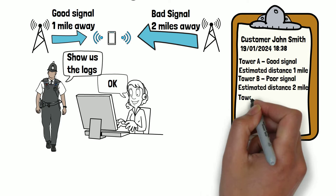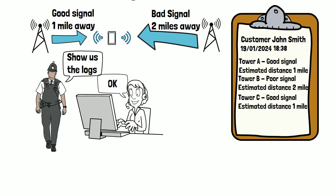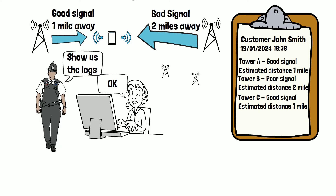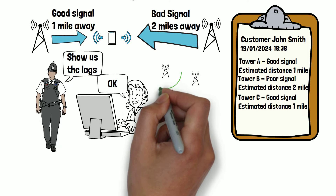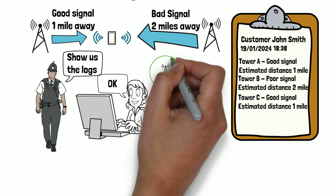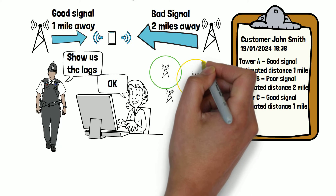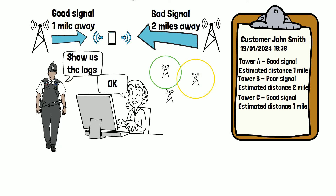The signal strength indicates the distance the phone was from a tower. By analysing the signal strength from multiple towers, they can triangulate the device's location. If we say it was one mile from tower A, we know the phone was somewhere along the line of this circle. If it was two miles from tower B at the same time, we know it was in one of the positions where the two circles overlap.